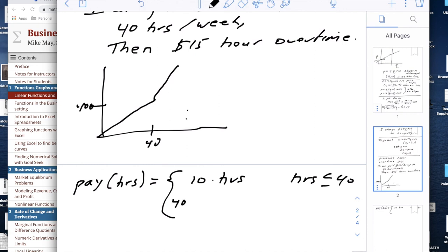It's 10 times hours if hours is less than or equal to 40. And it's 400 for the first 40 hours, plus 15 times (hours minus 40), when hours is greater than 40.